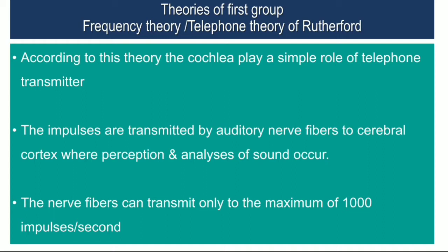In the first group, which says frequency analysis is done in the auditory cortex and not in the cochlea, the first theory is the telephonic theory of Rutherford. According to this theory, the cochlea plays the simple role of a telephone transmitter — it just receives the entire information and transmits it via the auditory nerve to the auditory cortex, where the analysis takes place. The nerve fiber can transmit only a maximum of 1000 impulses per second.